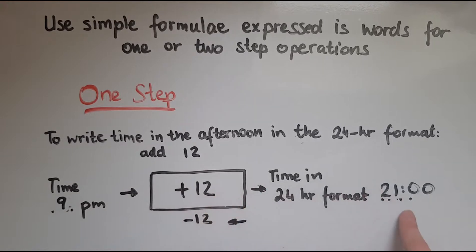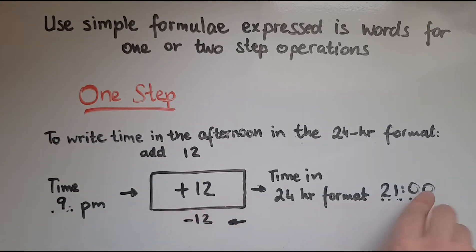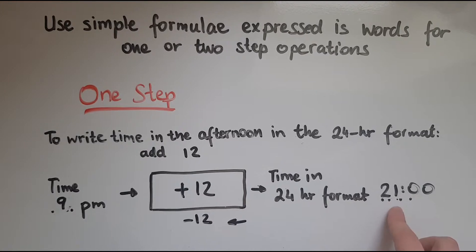9 add 12 gives me 21; 21 take away 12 gives me 9. You might be given time in the afternoon in a 12-hour format expressed with p.m., or you might be given time in the 24-hour format. Either way, you can find the missing time. If you are given the time in a 24-hour format, you reverse the process to find the time in the 12-hour format in the afternoon.